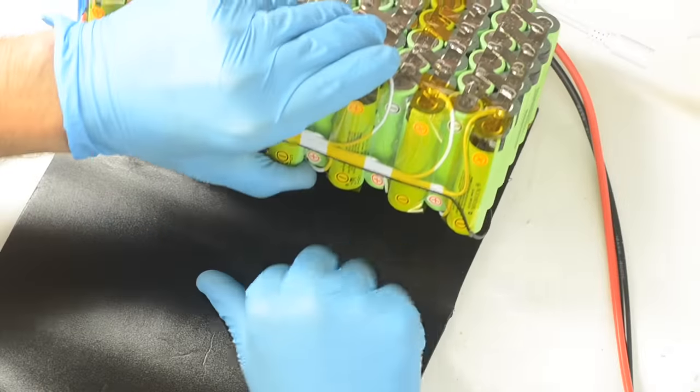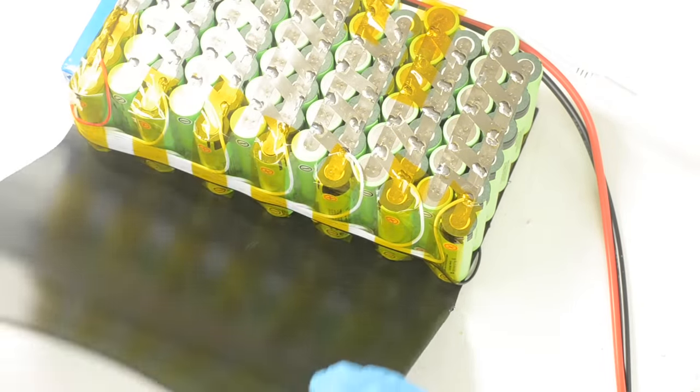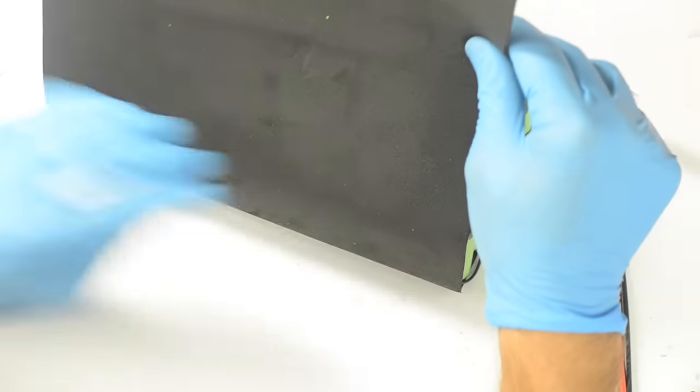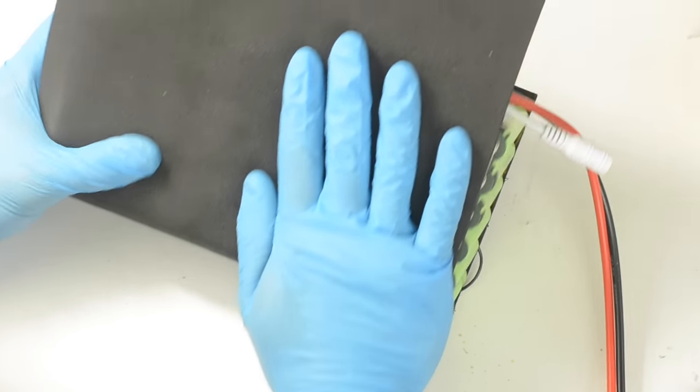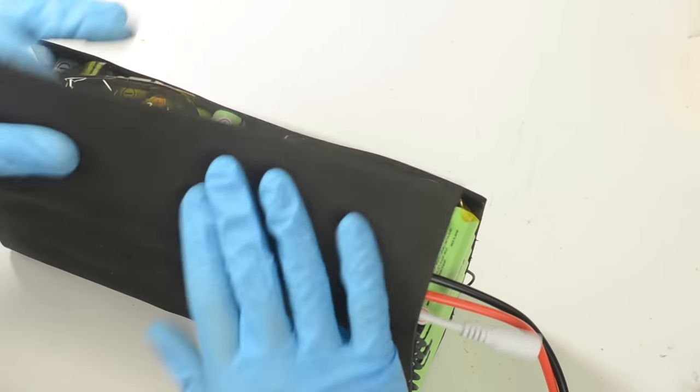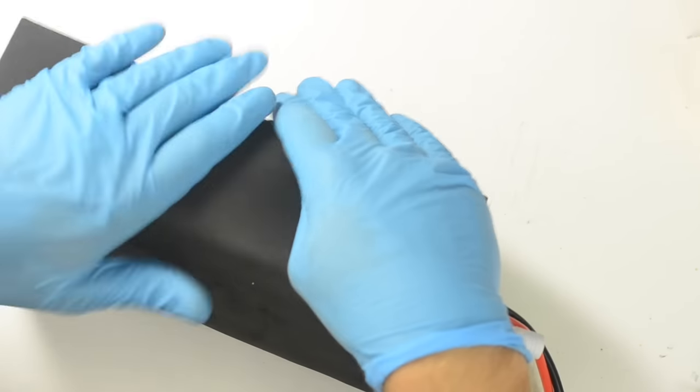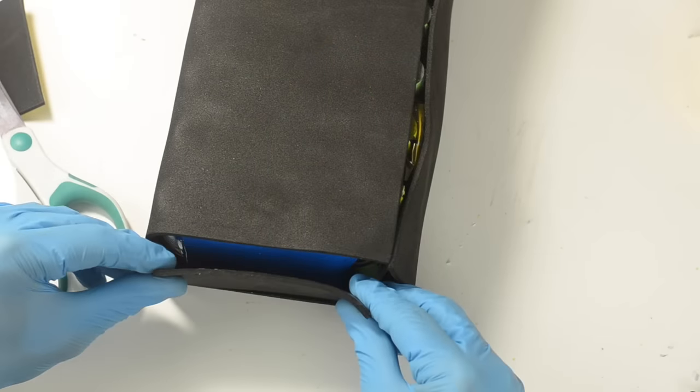Now that my BMS is connected, I can take that adhesive black foam that comes in the kit and I can wrap all the way around my battery just to make a nice protective layer. This will end up trapping just a small amount of heat, but it will give us a much nicer, more padded surface to our battery, which will help with any bumps that we take on our bike.